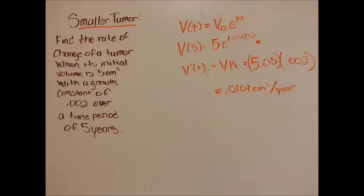Using the same example, we are going to change the larger tumor to a smaller tumor. So instead of the tumor being 10 centimeters cubed, it is now 5 centimeters cubed, therefore making the V equal to 5.05 and changing the growth rate from 0.0202 centimeters cubed per year to 0.0101 centimeters cubed per year, proving the previous statement of larger tumors growing faster and smaller tumors growing slower.